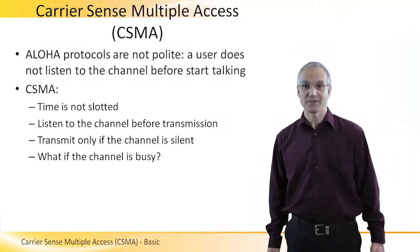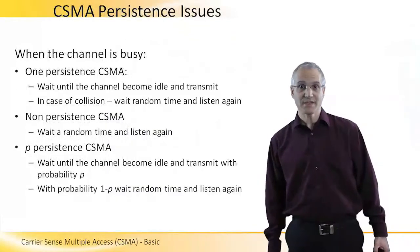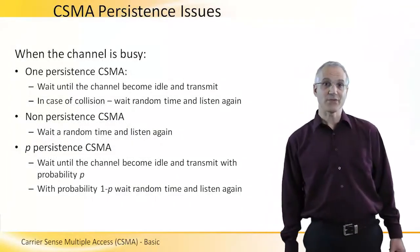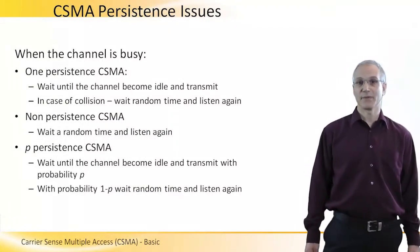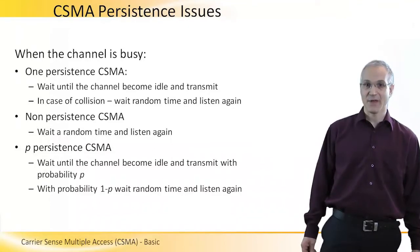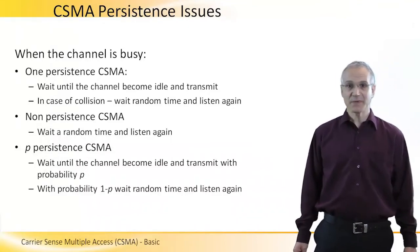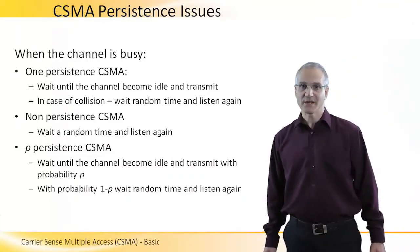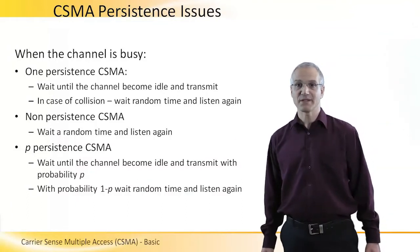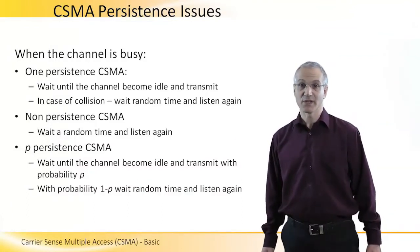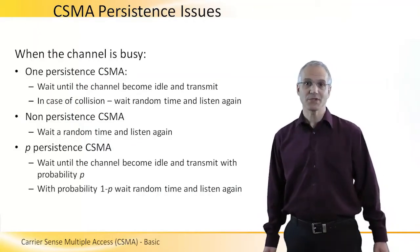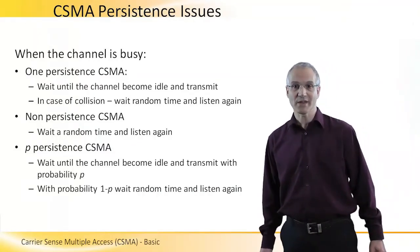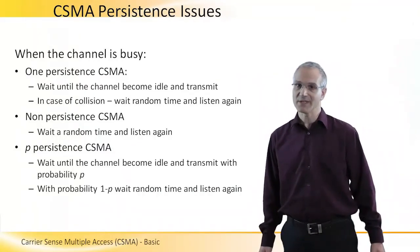The question is: what happens if the channel is busy? In this case, we have three different persistent models. In 1-persistent CSMA, we wait until the channel becomes idle and then immediately transmit. In case of a collision — because maybe two users were waiting for the channel to become idle — we wait a random time and listen again.